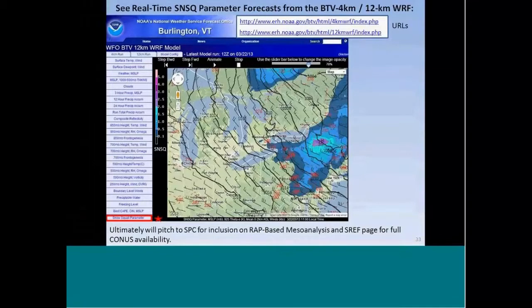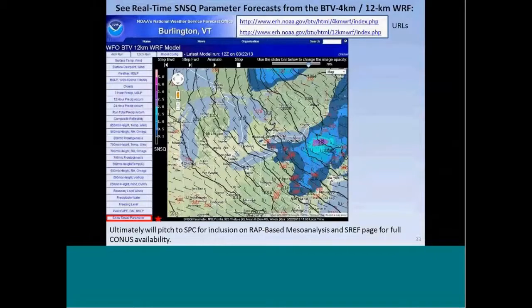The snow squall parameter can be viewed in real time from the Burlington National Weather Service website at the URLs listed here. It is the bottom-left tab available when the menu comes up for the WARF model, both at 4 and 12 kilometers — just click on snow squall parameter to see the actual fields. Ultimately, we're going to try to get this included at the Storm Prediction Center on their Mesoanalysis and SPC pages, and that may be available for the next cool season.